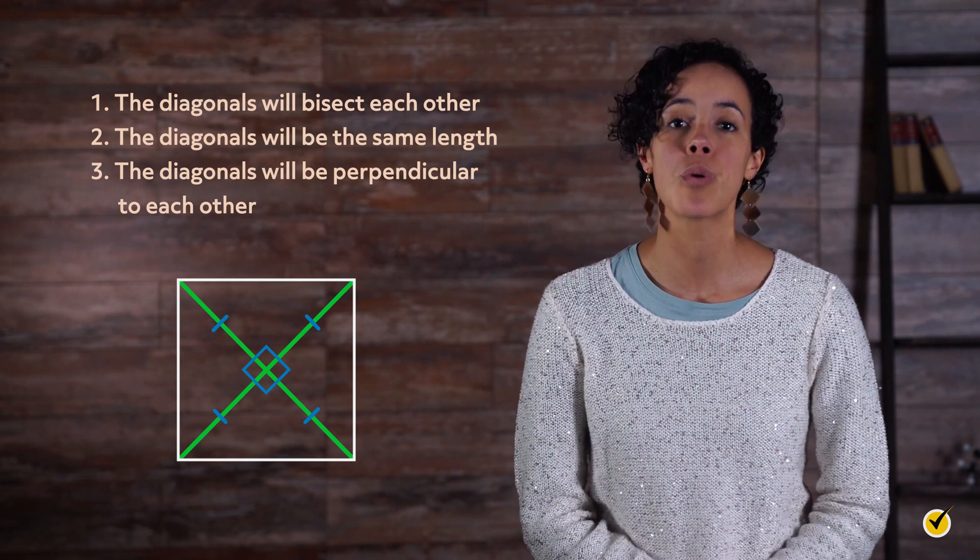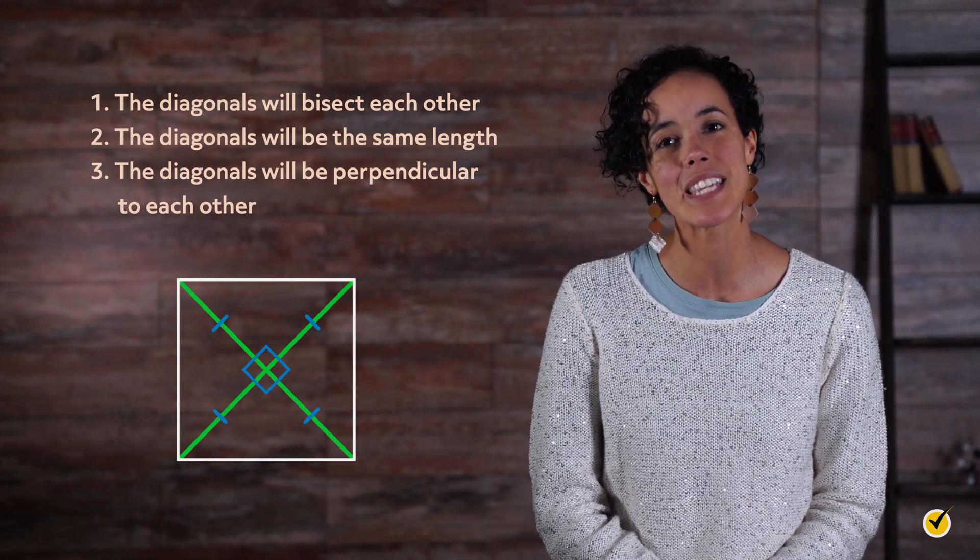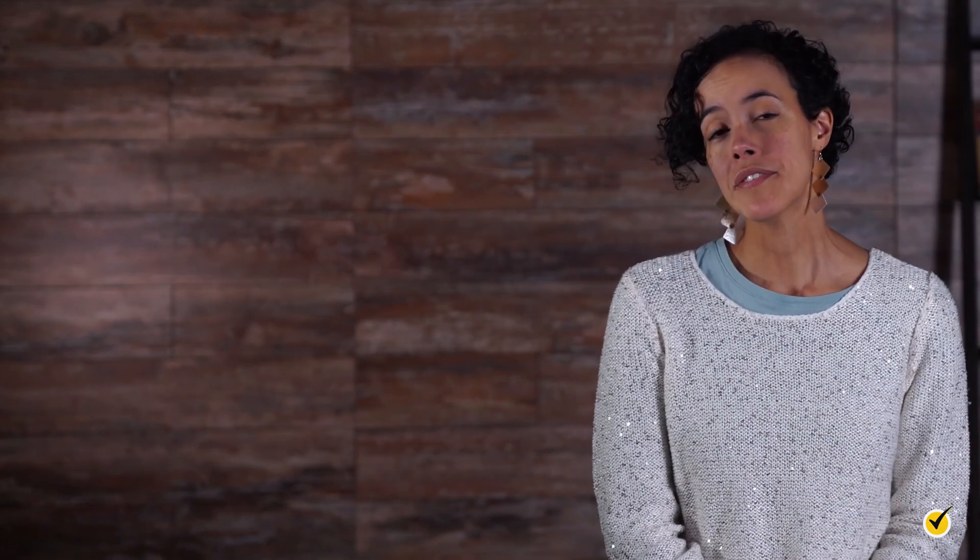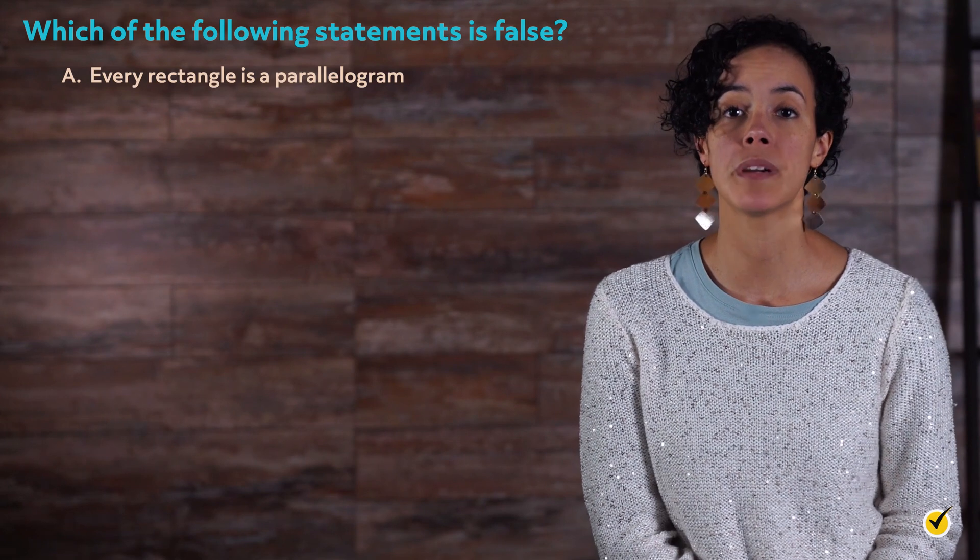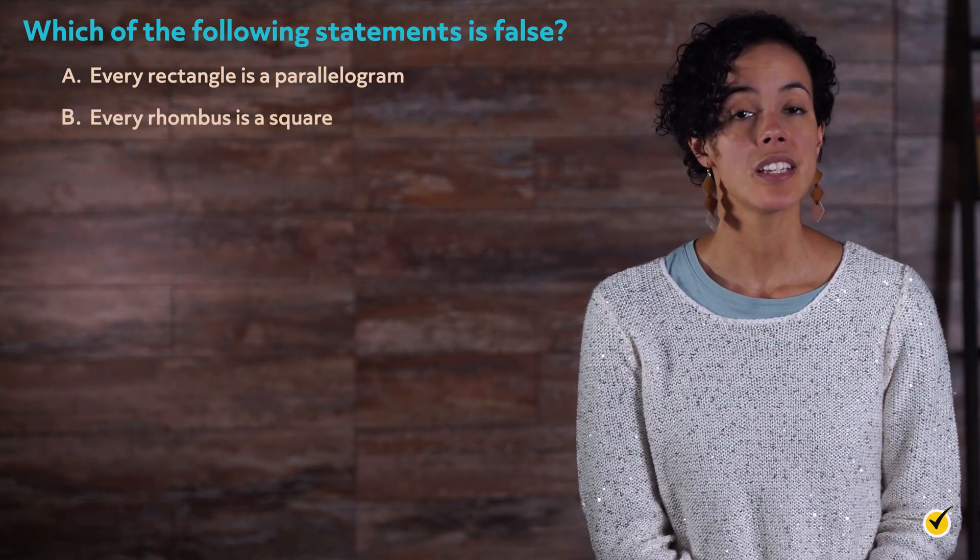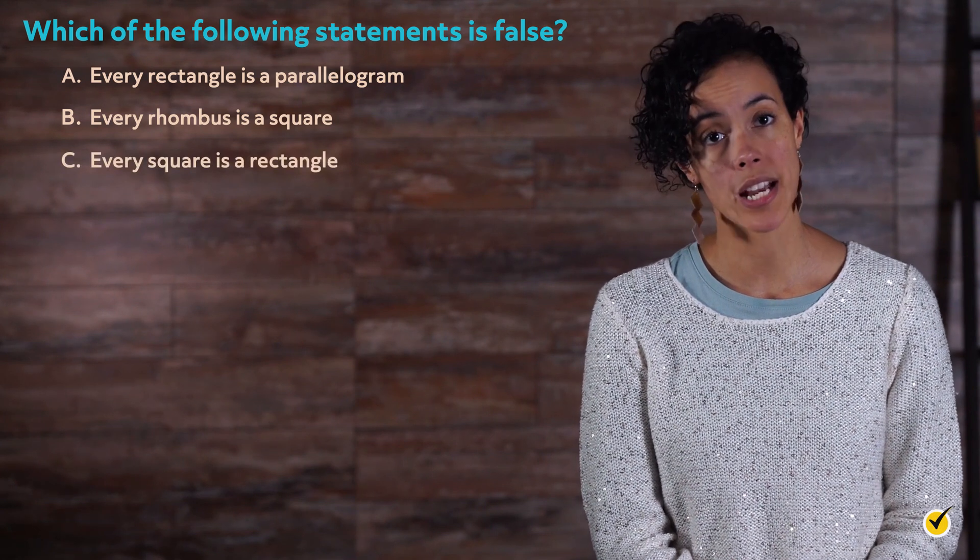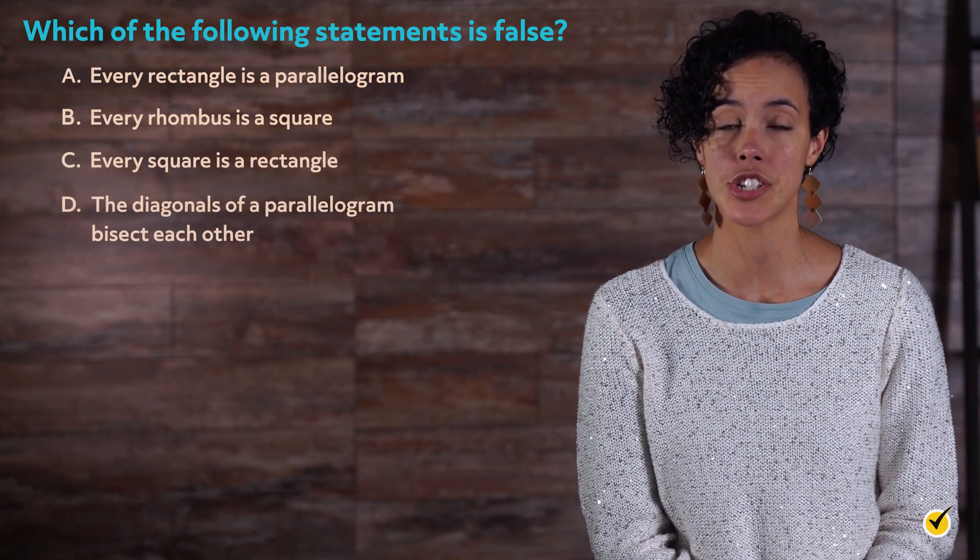Now that we've looked at our four parallelograms and their diagonals, let's finish with a review to see what all you can remember. Which of the following statements is false? A. Every rectangle is a parallelogram. B. Every rhombus is a square. C. Every square is a rectangle. D. The diagonals of a parallelogram bisect each other.